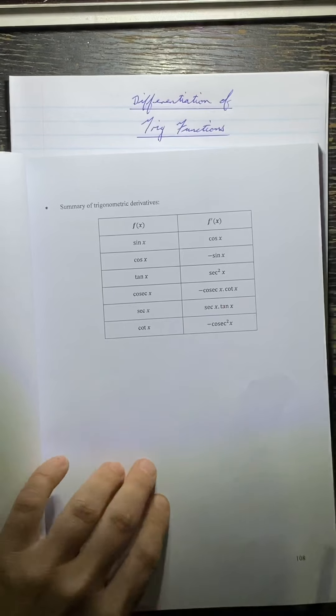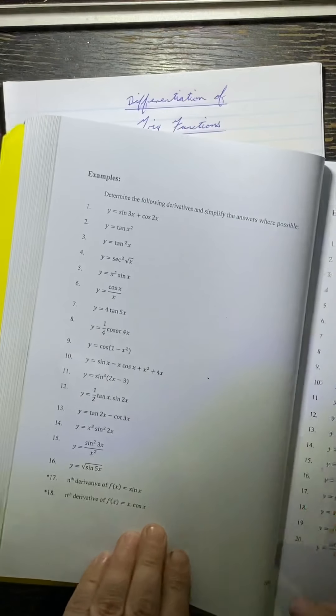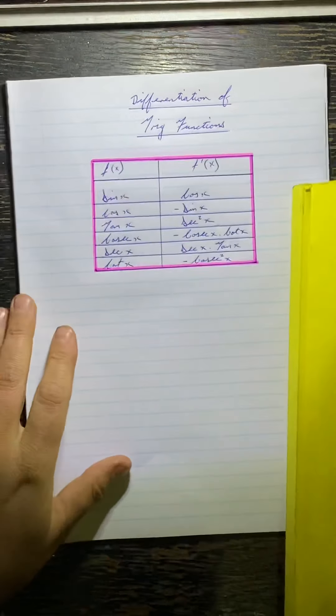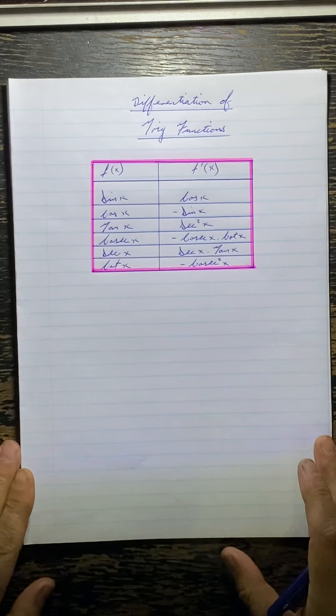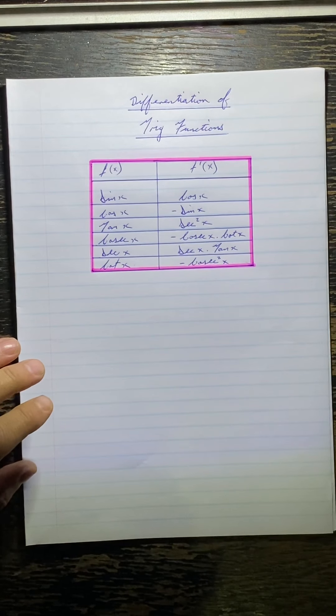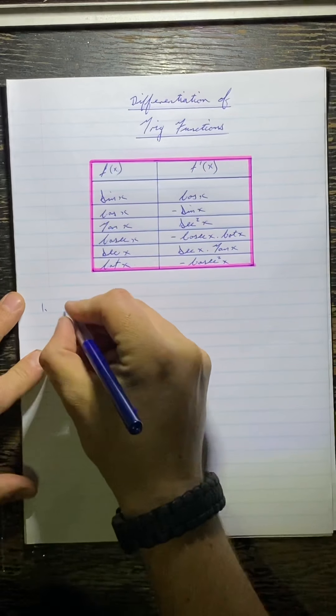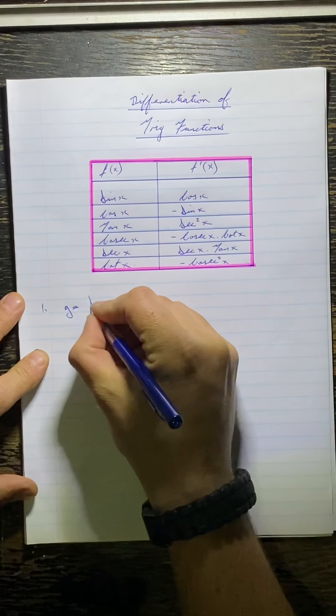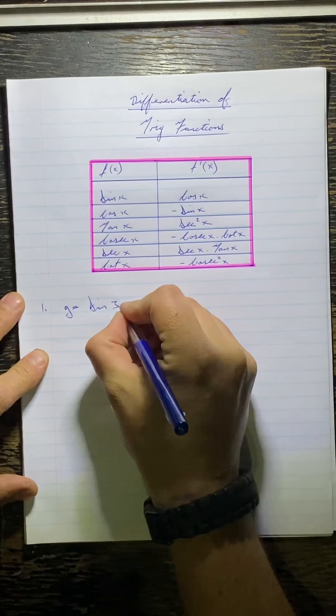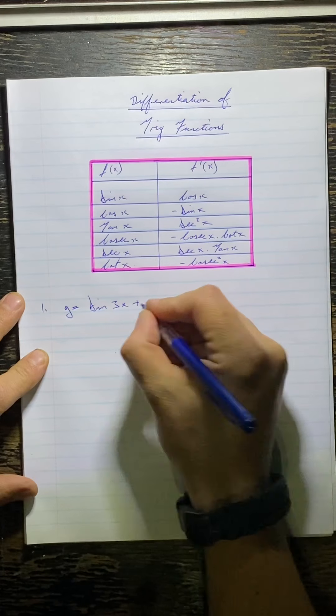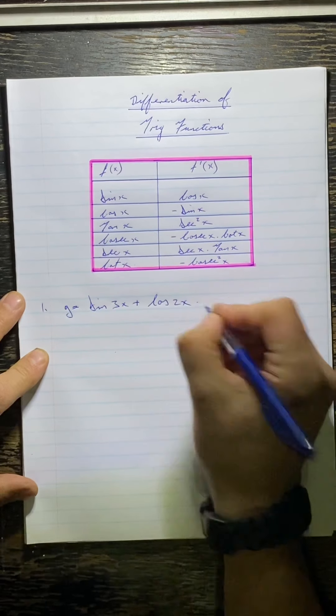You can follow in your book and I'm going to be doing these examples — this is on page 109. I've just drawn up the table; you guys can copy that into your books if you want. The first example: determine the following derivatives and simplify the answer where possible. Number one, they've given us y is equal to sin 3x plus cos 2x.